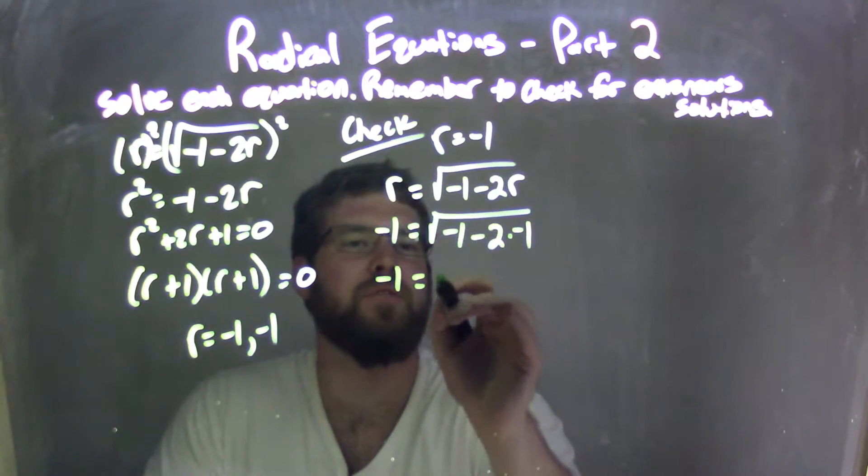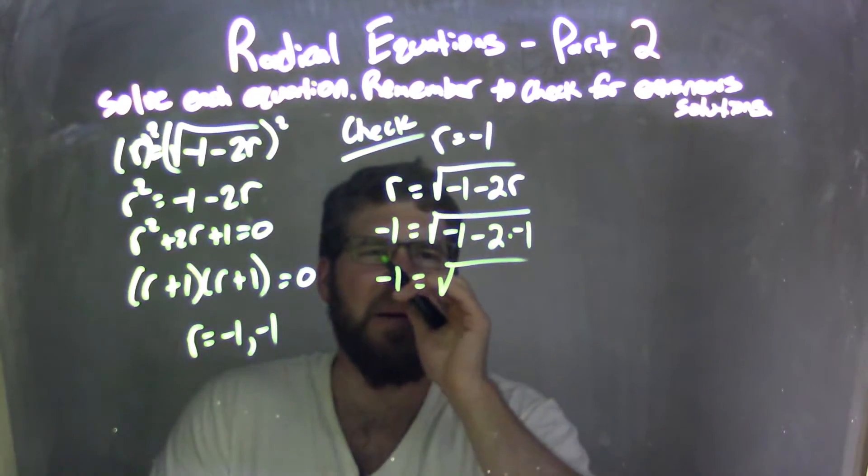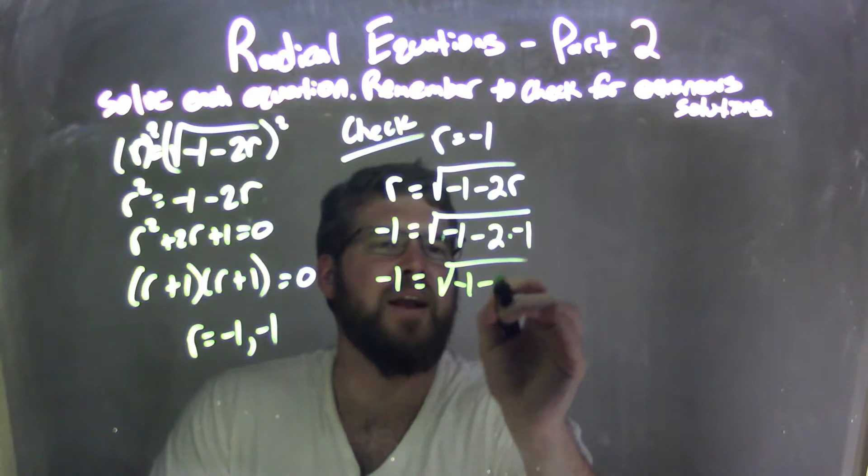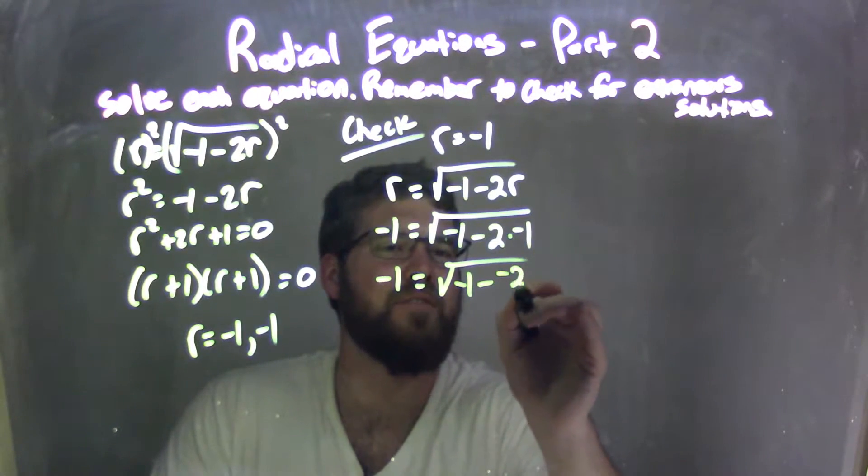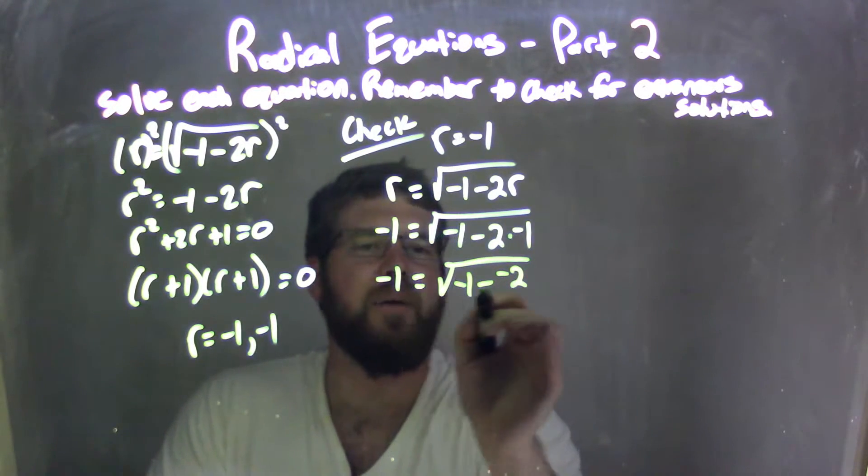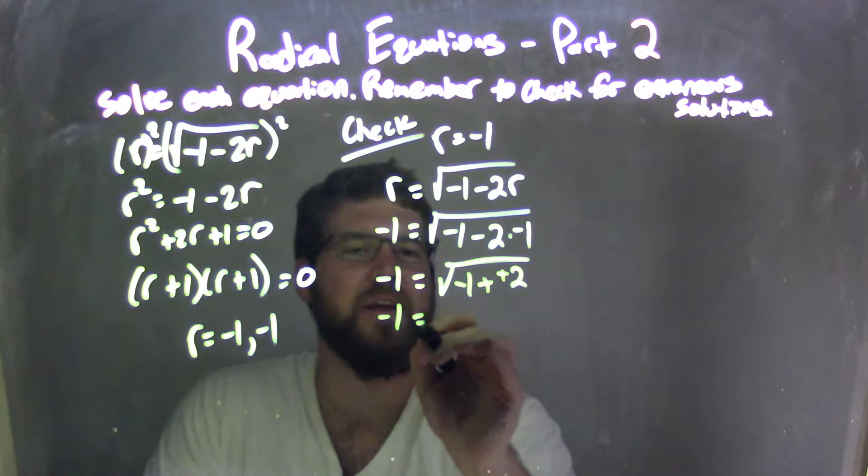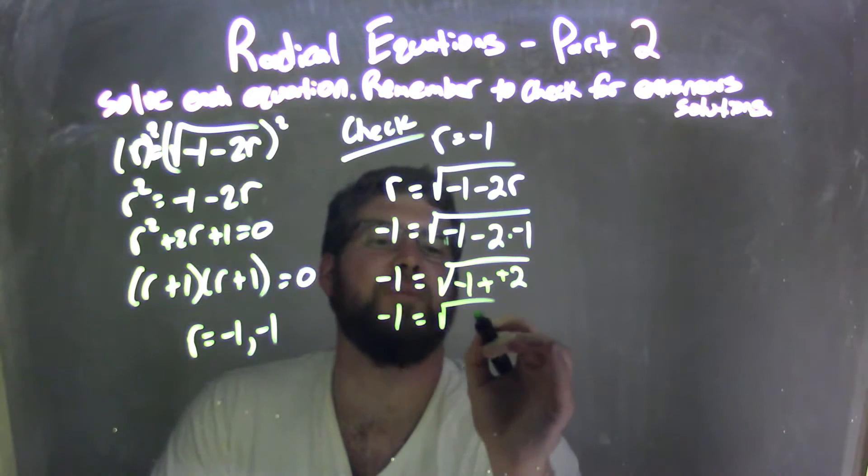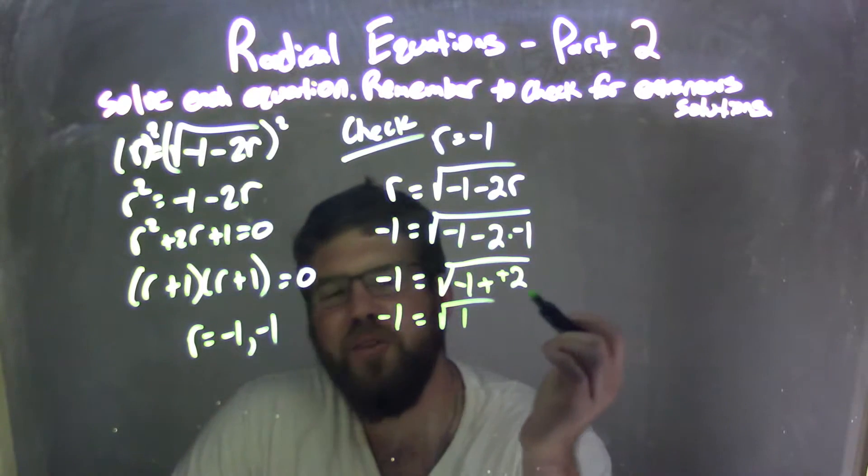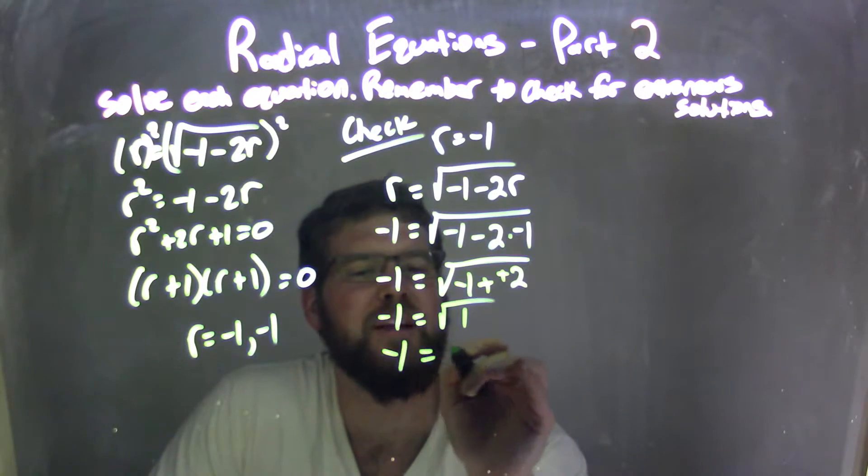So we have negative 1 equals the square root of, well, negative 1 minus 2 times negative 1 is negative 2. Now we have minus a negative, which is plus a positive. So negative 1 equals the square root of negative 1 plus 2 is a positive 1. Square root of 1 is a positive 1. Negative 1 equals a positive 1.